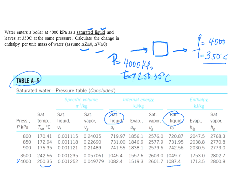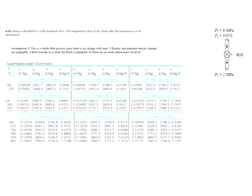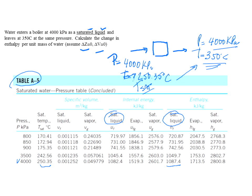So the pressure is also 4,000 kilopascals. Since the exit temperature is 350°C, and T-SAT here is 250.35°C, my temperature is larger than my saturation temperature — 350 is larger than 250. So I know I have to look at the superheated vapor table to find the enthalpy of the water leaving the boiler. I want you to find that number and know the result, because a problem like this will be on the exam.